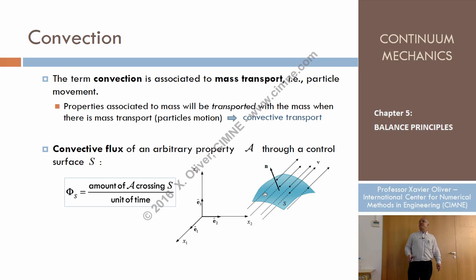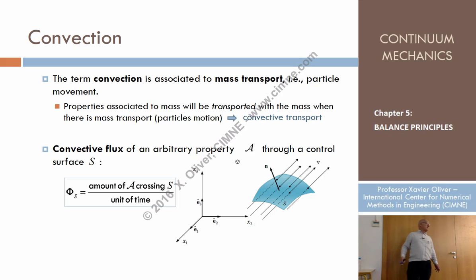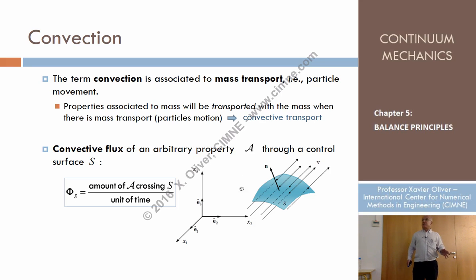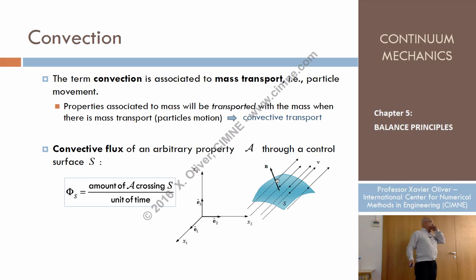Imagine you have a fixed surface in space, with a normal defined. The continuum medium and its particles move along time, so there will be particles crossing this fixed surface over time. In this movement and crossing of particles through the surface, the properties carried by the particles will also cross the surface per unit of time.